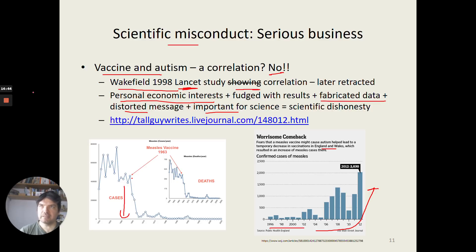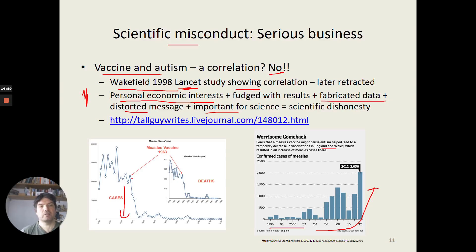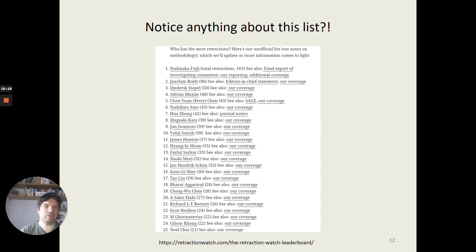So we've seen a couple of clear-cut examples of scientific dishonesty, and a couple of more ambiguous examples showing how difficult it is to rule out biases. I've begun to give a definition of what scientific dishonesty involves, but will complete that in the next video. In the live session there will be more examples and opportunities to apply the definition of scientific misconduct.